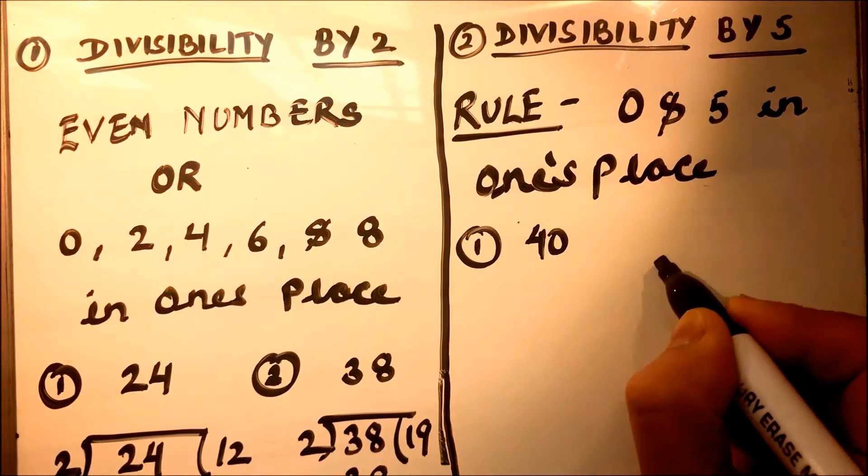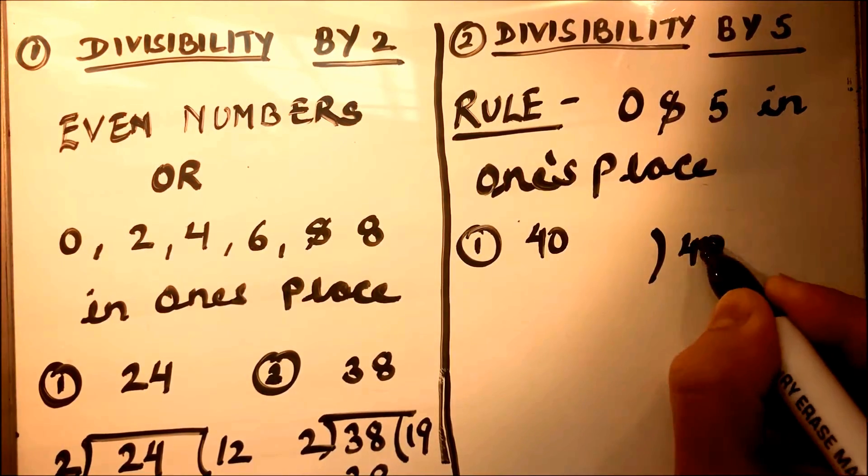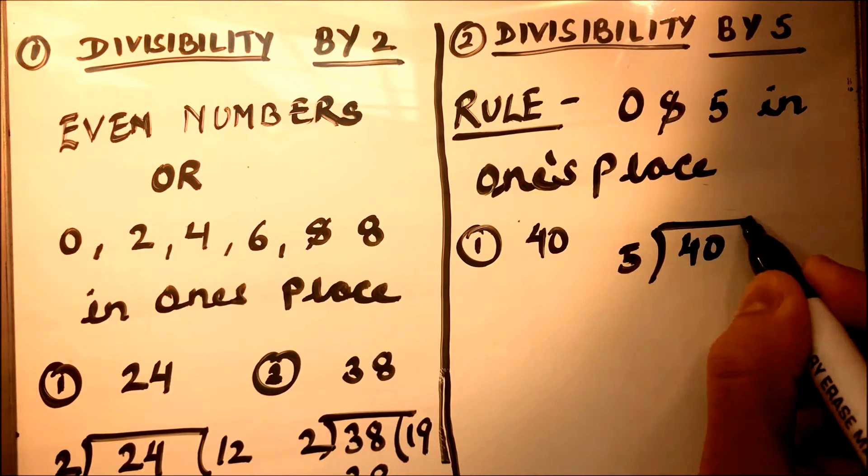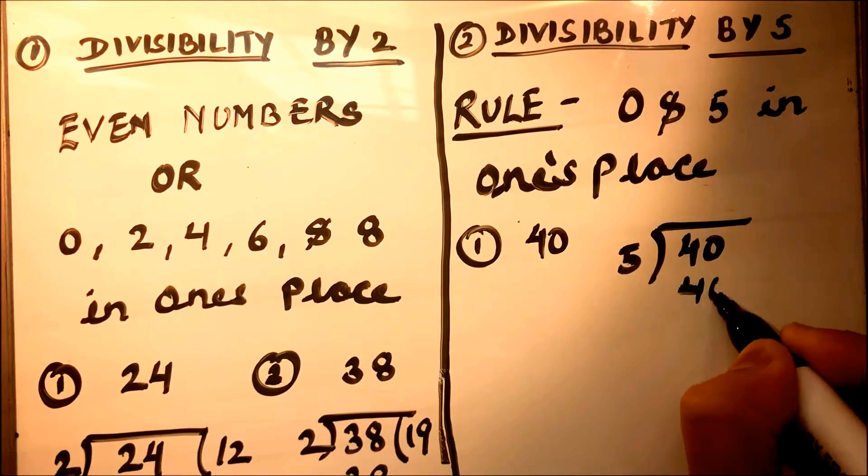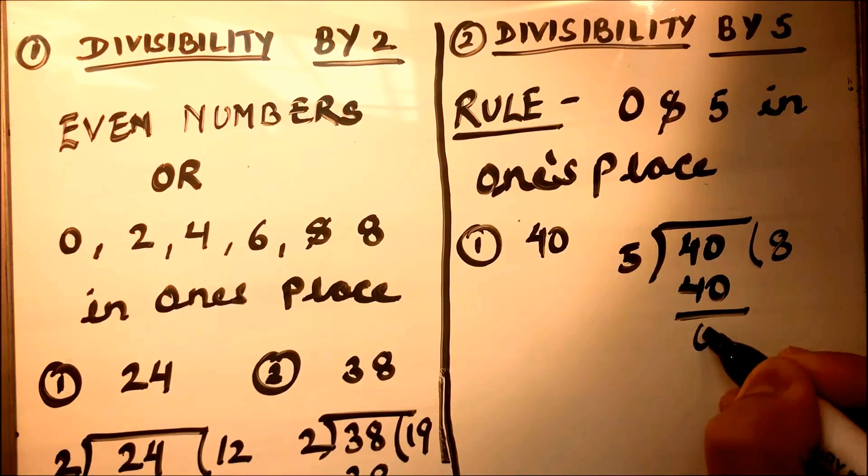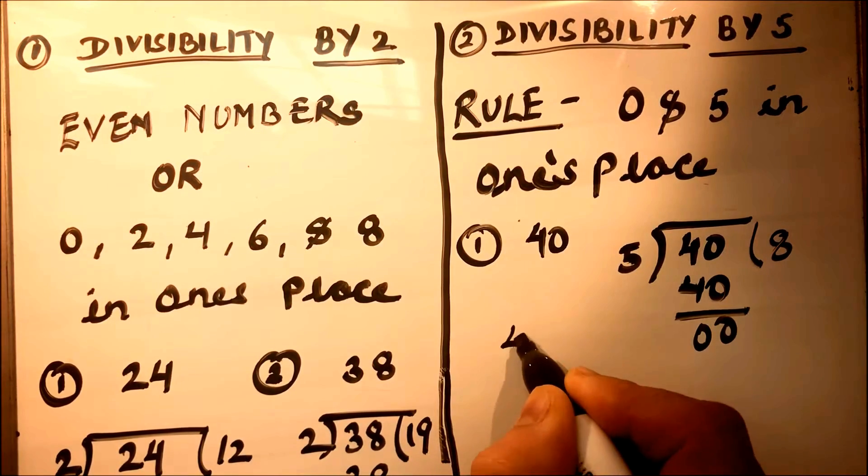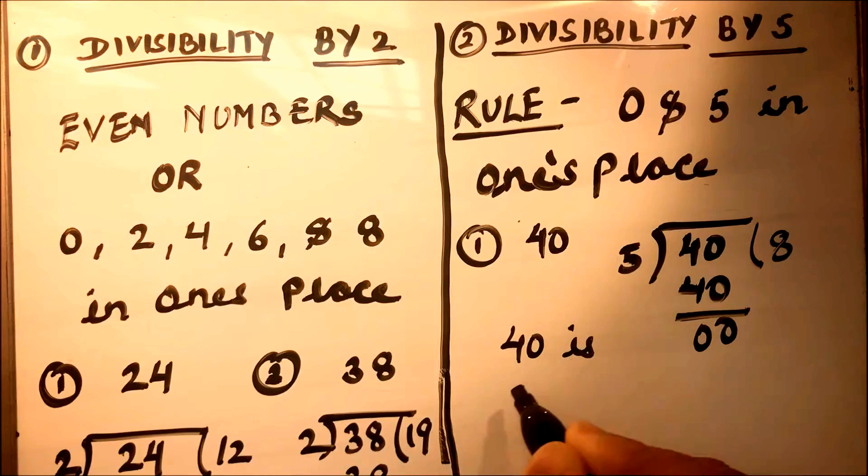Let's have number 40. If we divide 40 by 5, then we are going to get 8 with 0 remainder. So 40 is divisible by 5.